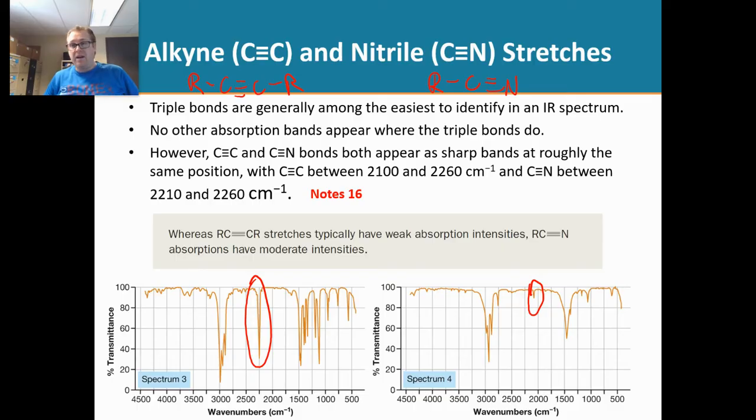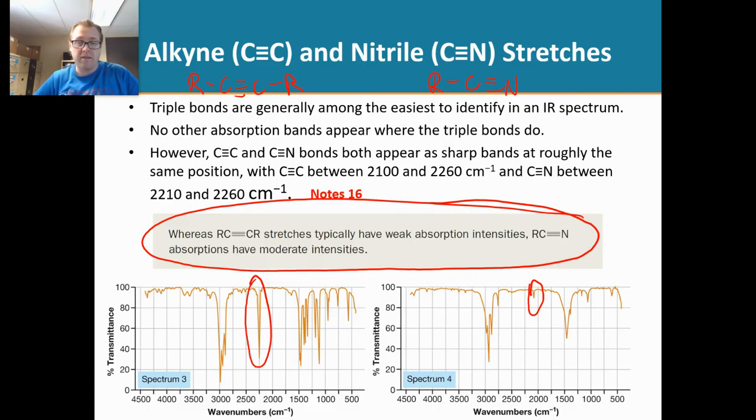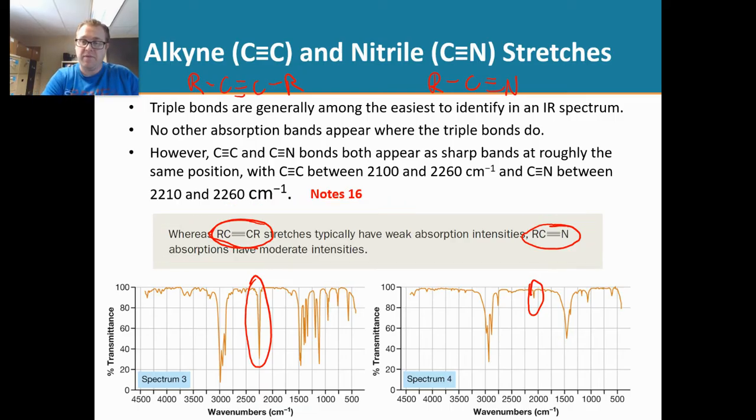Now, there are some differences between an alkyne and a nitrile. And that's kind of demonstrated in this little blurb right there, where an alkyne stretch is typically weak and a nitrile stretch is typically intense. So based off of that explanation, if we looked at spectrum 3 and spectrum 4, which one would you predict would be the nitrile? Well, the nitriles are the ones that are more intense. So that one right there would be our nitrile, and the one on the right would be our alkyne.